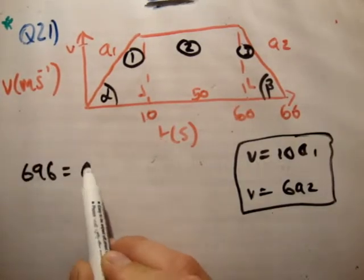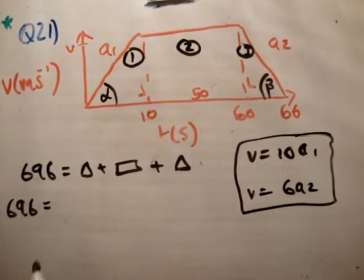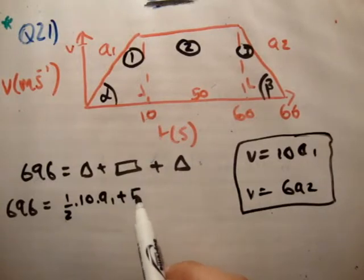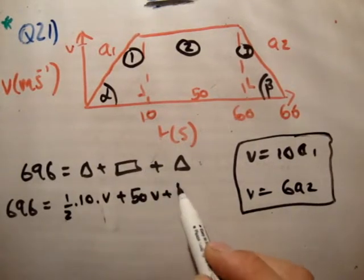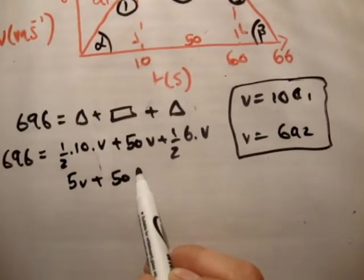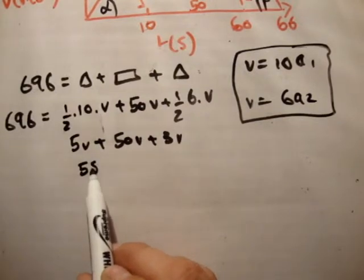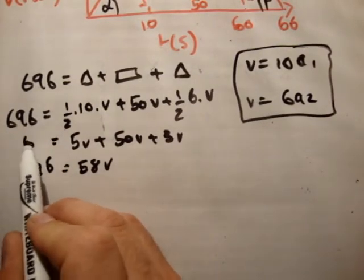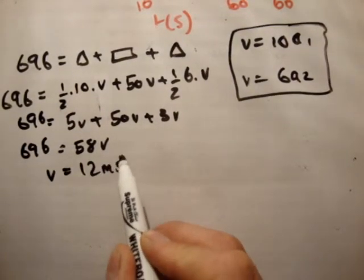So 696 is equal to triangle plus rectangle plus triangle. So 696 is equal to half 10, which is the base, times A1, plus the base, which is 50 times V. 50 times V plus a half, 6 times V. So that's 5V plus 50V plus 3V. And that turns out to be 58V. And that's equal to 696. Therefore, V is equal to 696 divided by 58, which is equal to 12 meters per second.